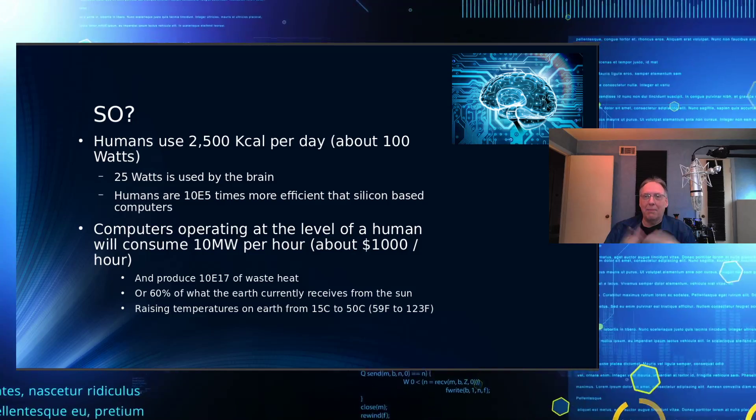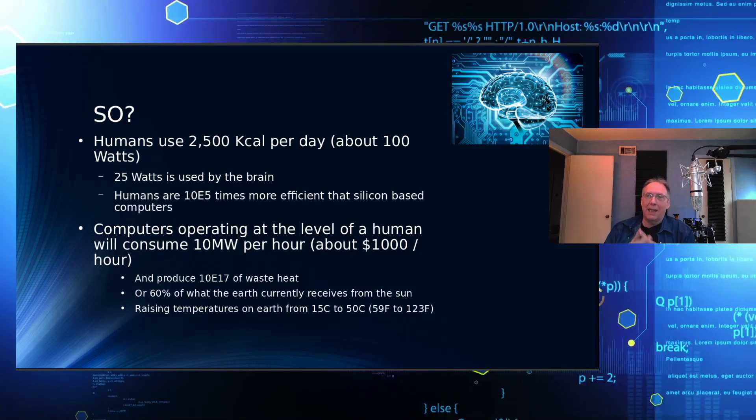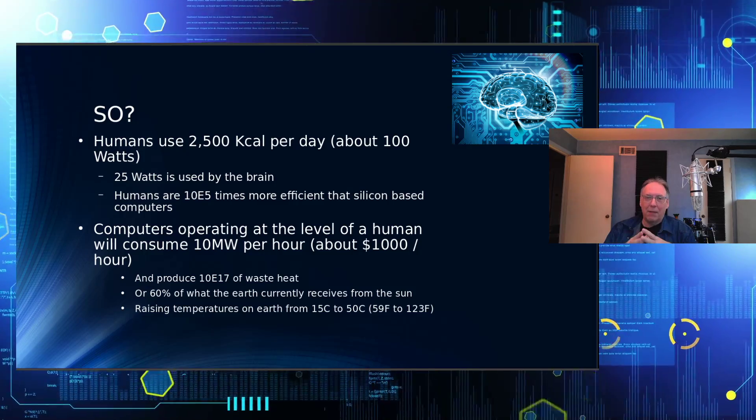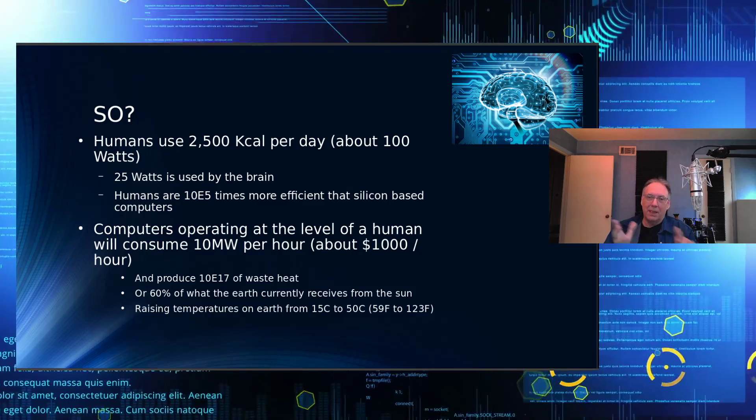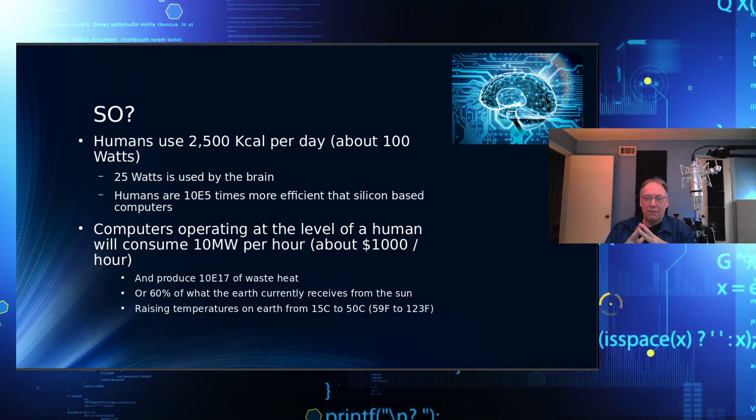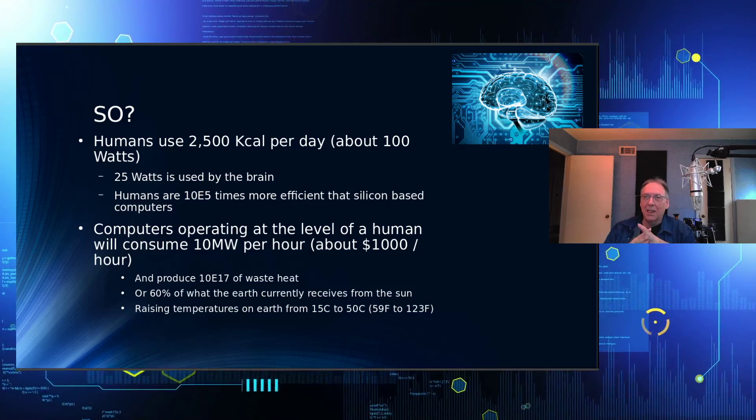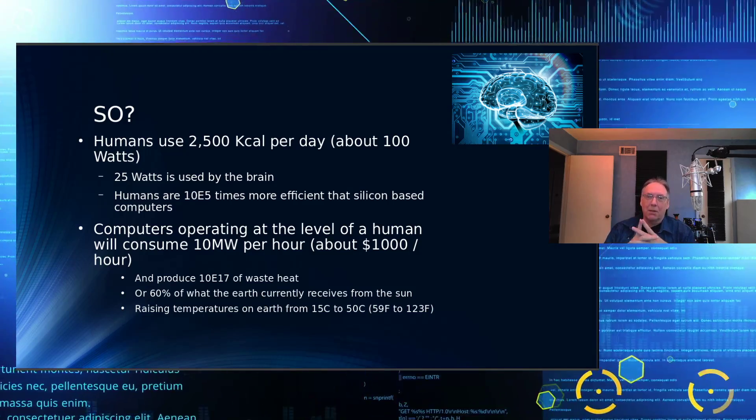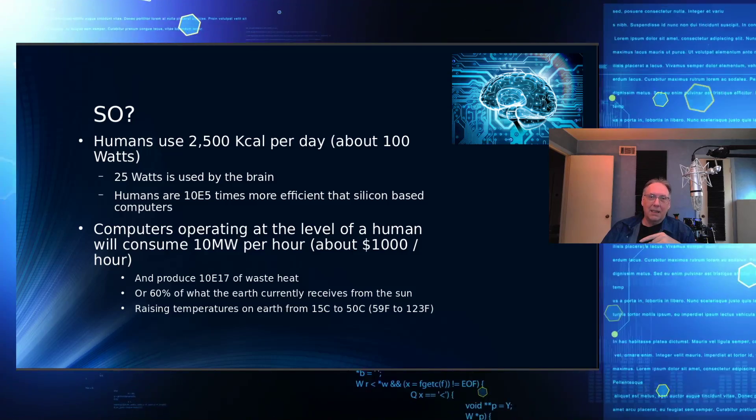If it gets trapped in the atmosphere, some of it's going to escape, some of it's going to get trapped. But that could raise the temperature of the Earth between 59 degrees and 123 degrees Fahrenheit, or about 15C to 50C or so. So you don't have to worry about greenhouse gases. We'll cook ourselves with our own computers, is the answer to that.